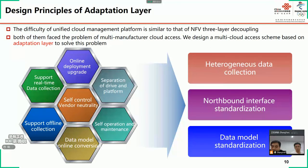The difficulty of UCMP design is similar to the difficulty of NFV three-layer decoupling, and both are facing the problem of different data models and interfaces during multi-vendor cloud platform access. We designed a multi-cloud access solution based on the adaptation layer to solve this problem. The principle of the adaptation layer is as follows: first, it supports real-time and offline data collection, real-time conversion of data models, and it can be self-operated and maintained and upgraded separately. Finally, because of the sensitivity of data, it must have independent control and achieve vendor neutrality.